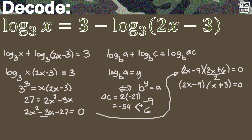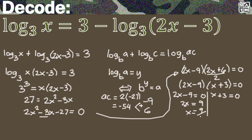Now we separate the two factors using the zero product property, which tells us the product equals zero if one or both factors equal zero. Solving the two values: from 2x minus 9 equals 0, we get 2x equals 9, so x equals 9 halves. From x plus 3 equals 0, we get x equals negative 3. So there are two values for x.